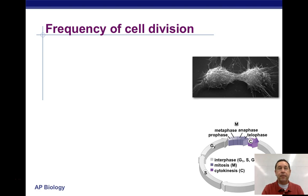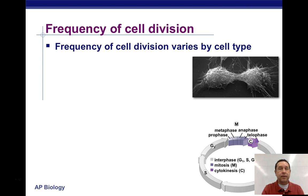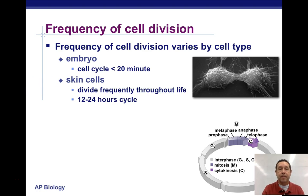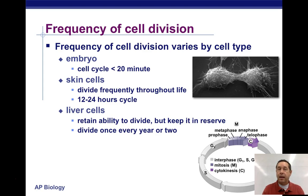Different cell types divide differently. In the embryo, the cell cycle is about 20 minutes or less — cells are dividing about every 20 minutes in that embryonic state. Skin cells divide pretty frequently throughout life, with about a 12 to 24-hour cycle. Liver cells have the ability to divide, but they don't do it very often — about once every year or two, liver cells will divide to replace ones that have been damaged or worn out.